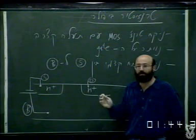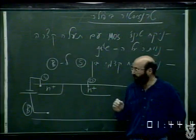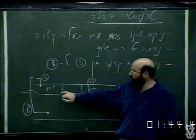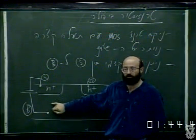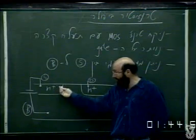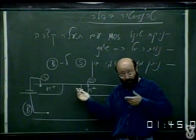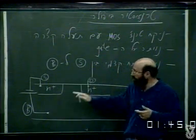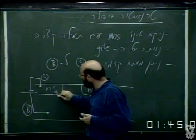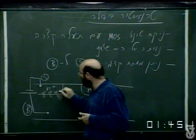היום כשהטרנזיסטורים הביפולריים כל כך קטנים, למעשה כל אחד מהם יכול להיות טרנזיסטור ביפולרי נפלא. הדבר המיוחד שעד עכשיו נזהרנו שלא יקרה - נזהרנו שלא יהיה מתח קדמי מסורס לבלק, כי אמרנו שאנחנו לא רוצים הזרקה מסורס לבלק. רצינו שהזרקה של אלקטרונים מהסורס תהיה רק לתוך התעלה, ובשל זה היינו צריכים את הגייט. עכשיו אנחנו לא צריכים את הגייט - אנחנו נותנים פה מתח קדמי שנותן לאלקטרונים הזרקה מה-N פלוס אל ה-P. זה דיודה בממתח קדמי.